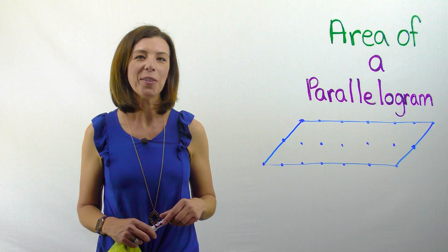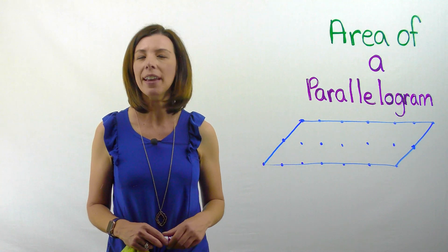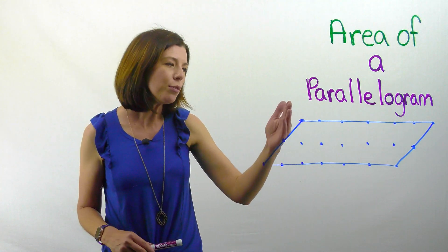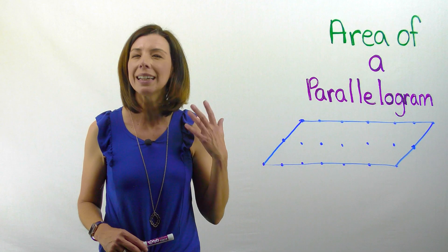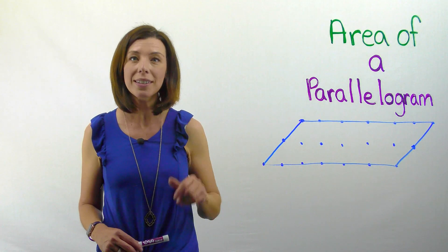You should have drawn and cut out something that looks similar to mine. Now here's what I'd like you to do. I'd like you to think about how we could find the area of this shape. What about if we cut off this triangle and moved it to the other side? Would that give us a shape that you could more easily count the squares for? Let's give it a try.